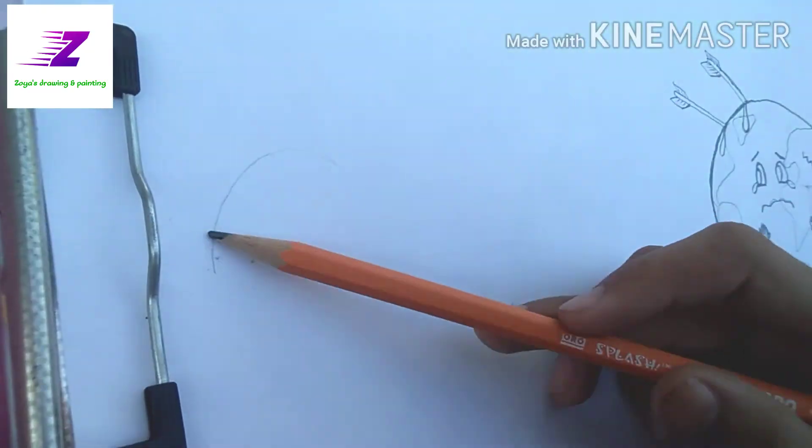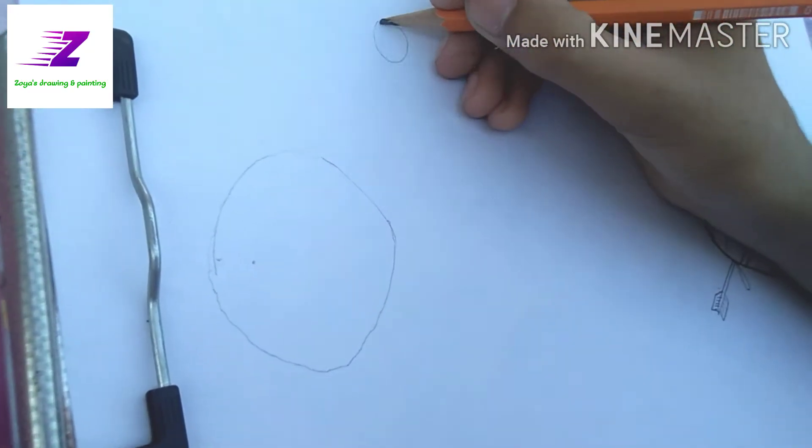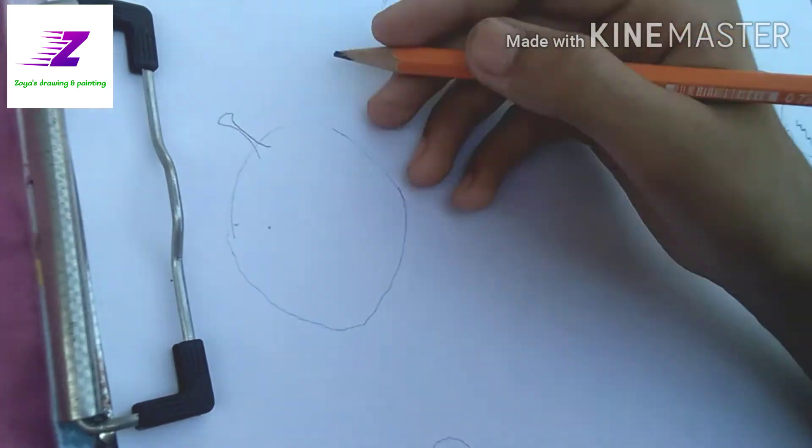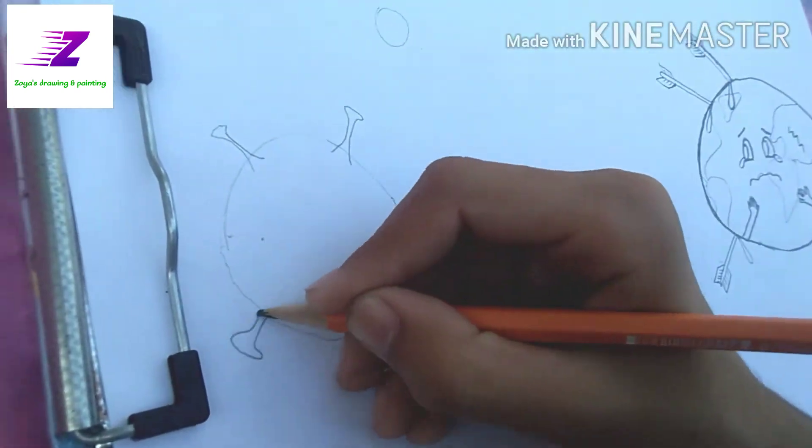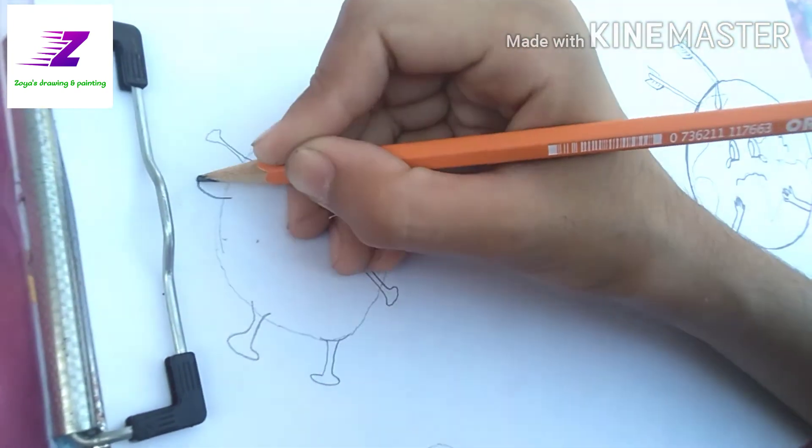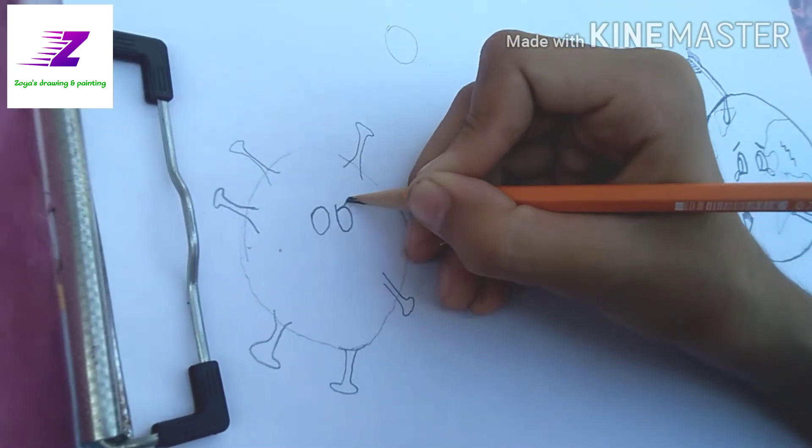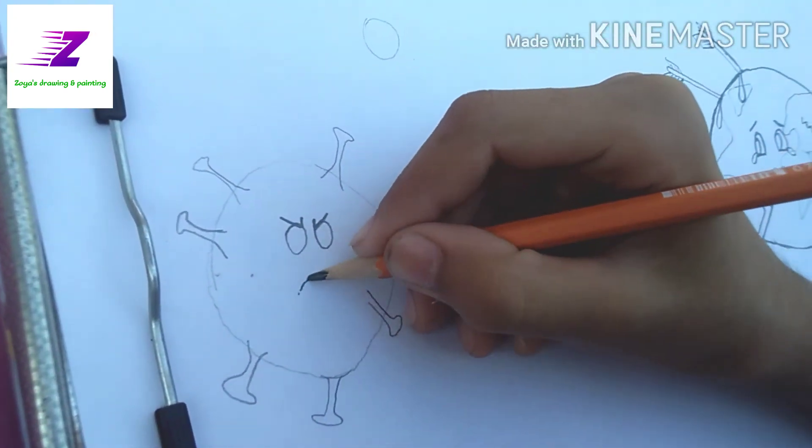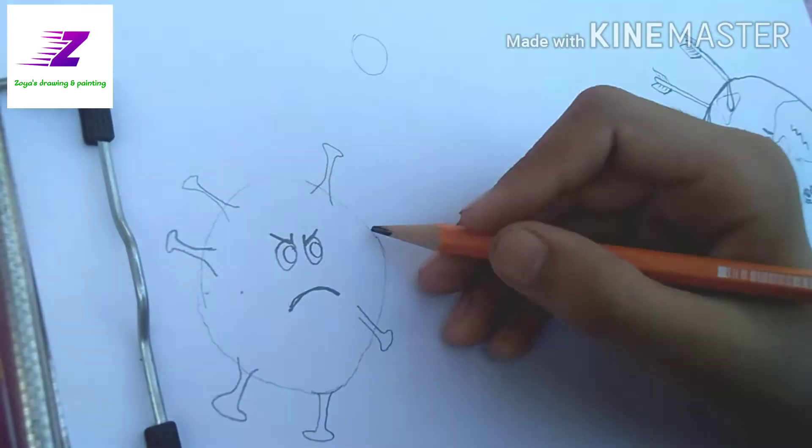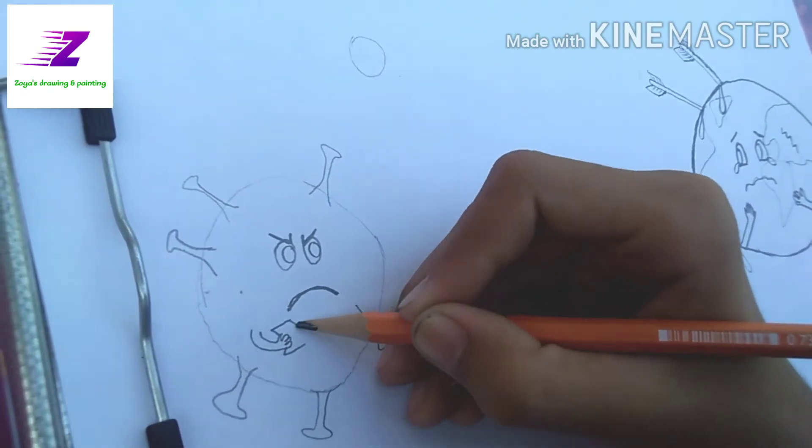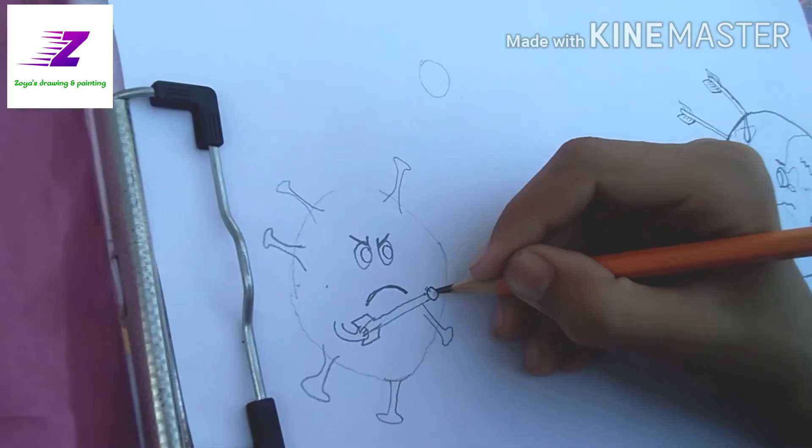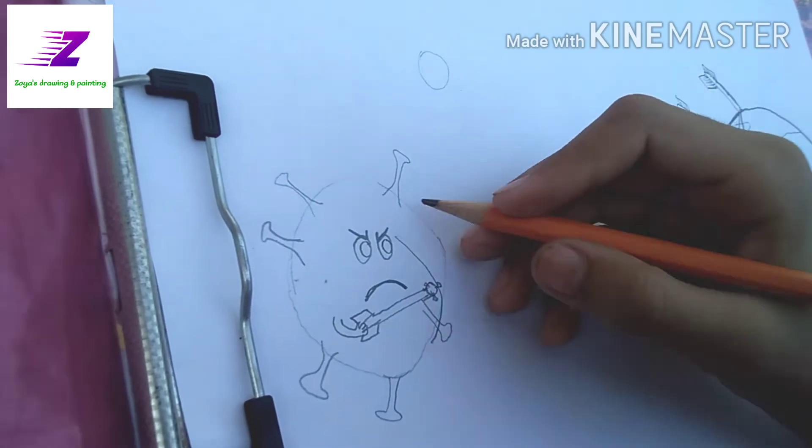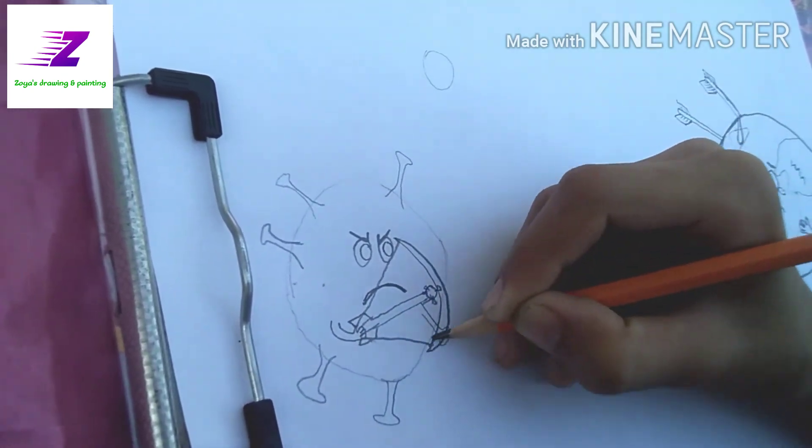And now I'm going to be drawing corona. So I'm drawing corona all angry and shooting arrows into the earth to harm it. I made small coronas on top of the bow's arrows.